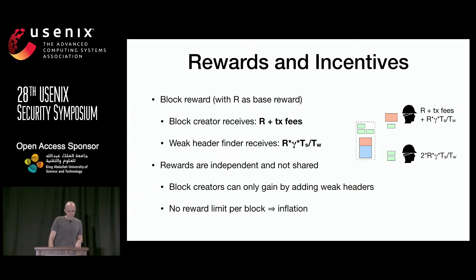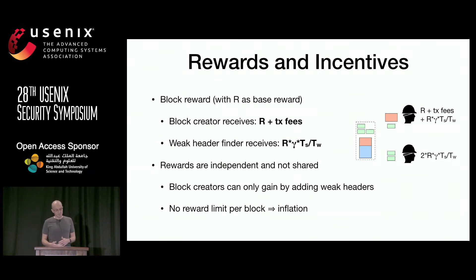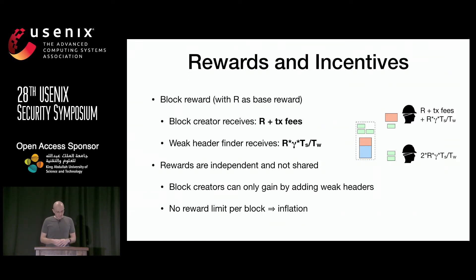We also change rewards and incentives. Block creators receive a base reward R and transaction fees, as in Bitcoin. Weak header finders receive a reward proportional to the difficulty of finding the given header, multiplied by parameter gamma. Critically, Strong Chain is not a zero-sum game anymore — rewards are independent and not shared. Block creators can only gain by including weak headers, and there is no reward limit per block, which implies some inflation. While Bitcoin has built-in deflation, this design is in line with recent research on the insecurity of Bitcoin's deflation model.